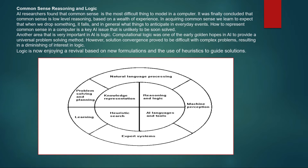The main question is how common sense can be represented in a computer. Another important area in AI is logic — how to generate logic. We have predicate logic and propositional logic. Computational logic was one of the early golden hopes in AI to provide universal problem solving methods, and logic is now enjoying a revival based on new formulations and the use of heuristics to form solutions to problems.